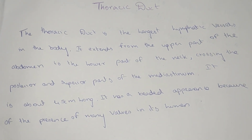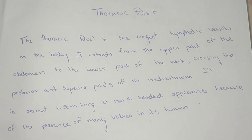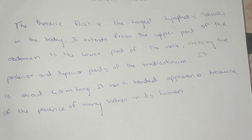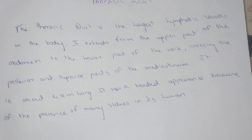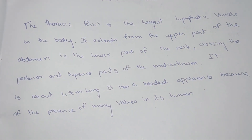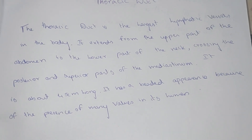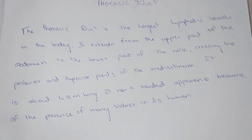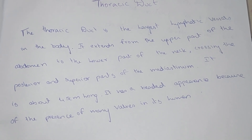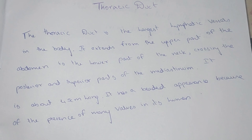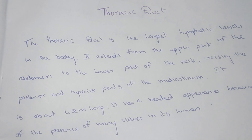The thoracic duct is the largest lymphatic vessel in the body. It extends from the upper part of the abdomen to the lower part of the neck, crossing the posterior superior part of the mediastinum. It is about 45 cm long. It has a beaded appearance because of the presence of many valves in the lumen.